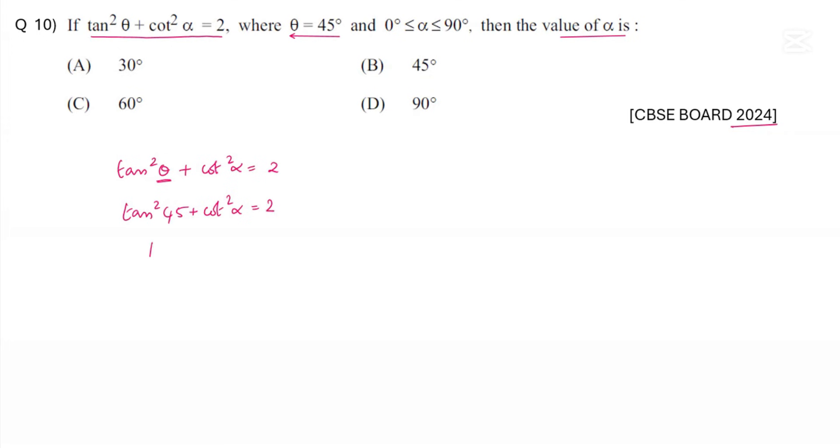You know tan 45° is 1, so tan²45° is 1² which is 1. So 1 + cot²α = 2, and cot²α = 2 - 1 which is 1.